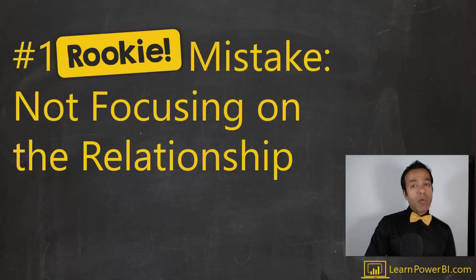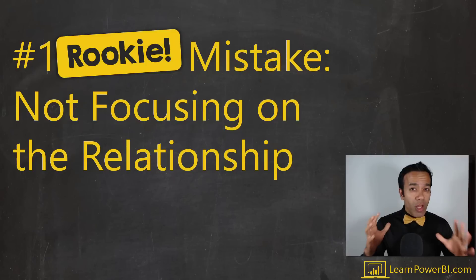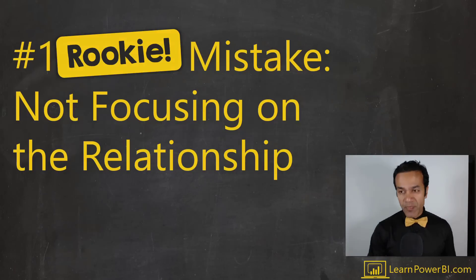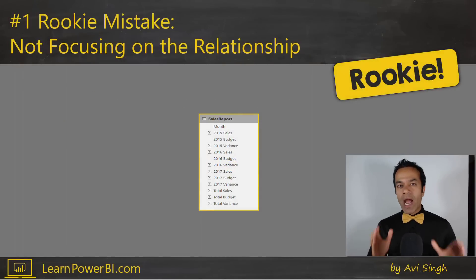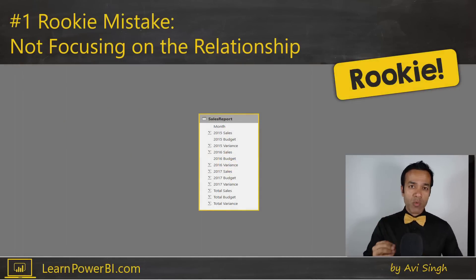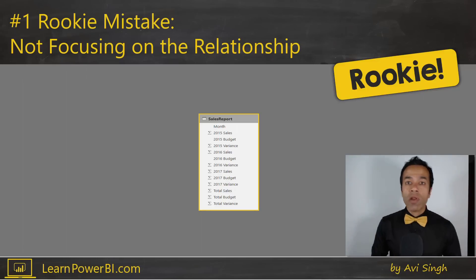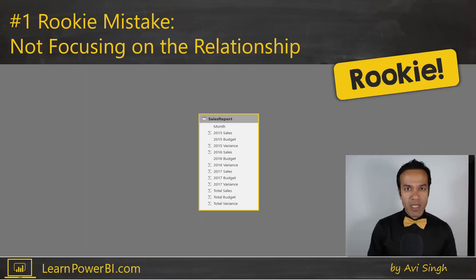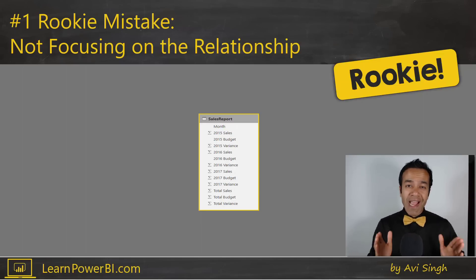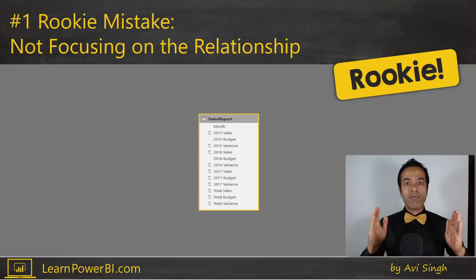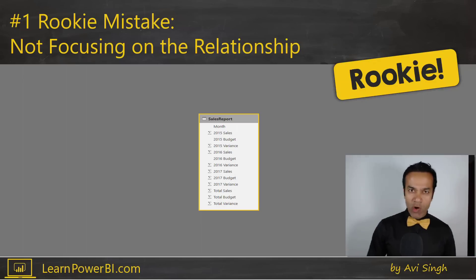The number one rookie mistake: not focusing on the relationships. Whether I'm working with a client or one of my students, pretty much the first thing I ask them to show me is the relationship view, because it tells me so much about what's going on and whether I'm dealing with a rookie or a pro. So often I see this rookie move where all they have is a big, wide, flattened table — and I know I'm dealing with a rookie.